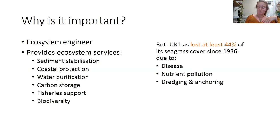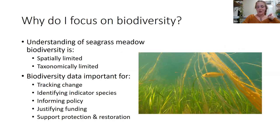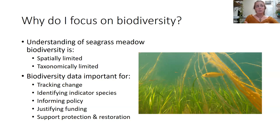It's really important we protect what we have left and restore it as well. There are various restoration projects happening around the UK, including two in Scotland: Restoration Forth happening in the Firth of Forth, and Sea Wilding over near Oban. Understanding of biodiversity supported by seagrass meadows in the UK is quite spatially limited — most research until recently was focused on England and Wales with very little from Scotland, and it was also taxonomically limited.